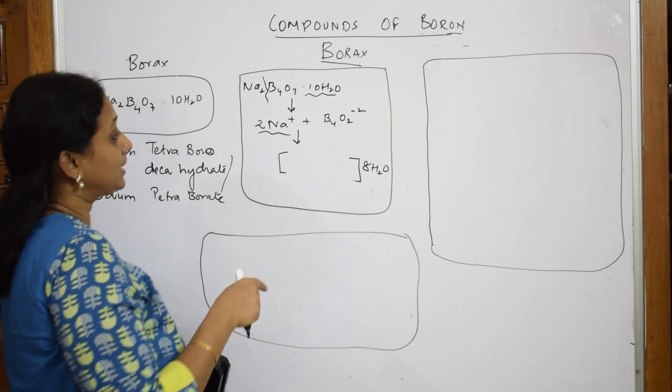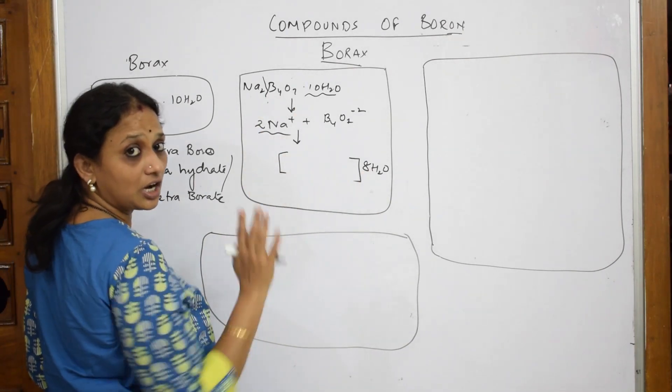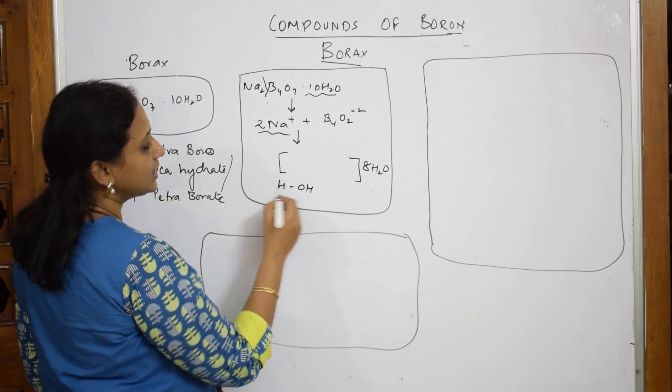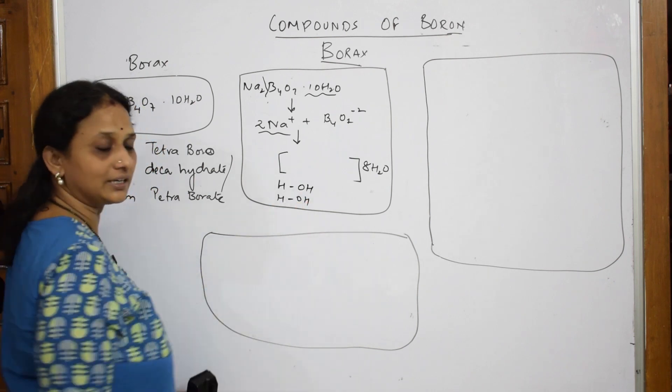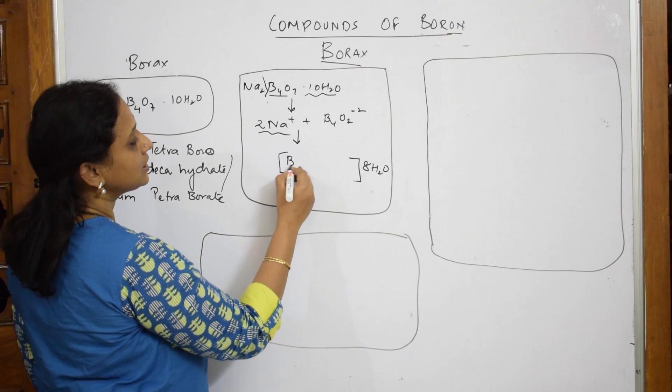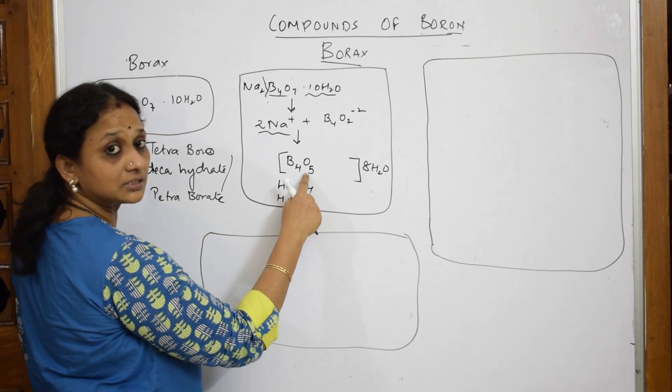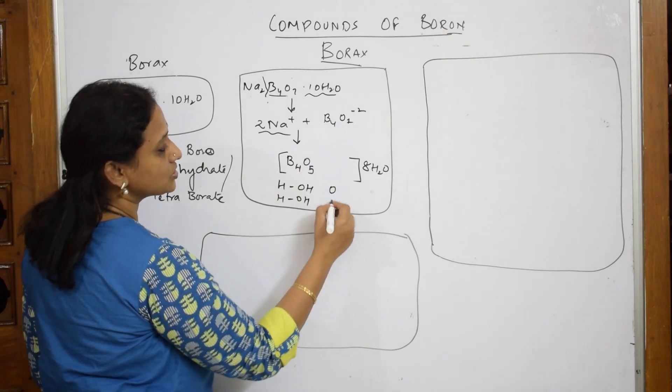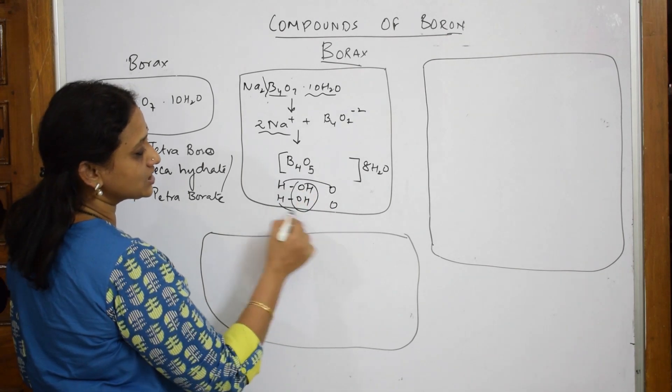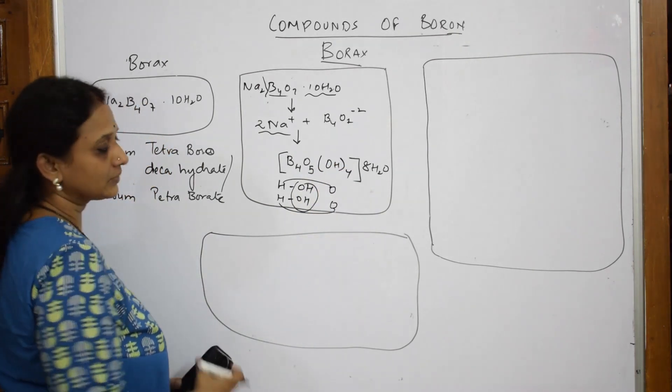We represent in this bracket. Now observe. In this particular compound, 8 have already gone. So how many are left? You are left with 2 more. So I am writing that as H, OH, HO. Just to show you all, okay. Done. Now after this, this particular B4O7, it exists as a B4O5. So how many oxygens are left here? You are left with 2 oxygens. Oxygen, oxygen. Now count. Your OH are 2 here. Your H and H are 2. So total 4. So it's going to form OH4.